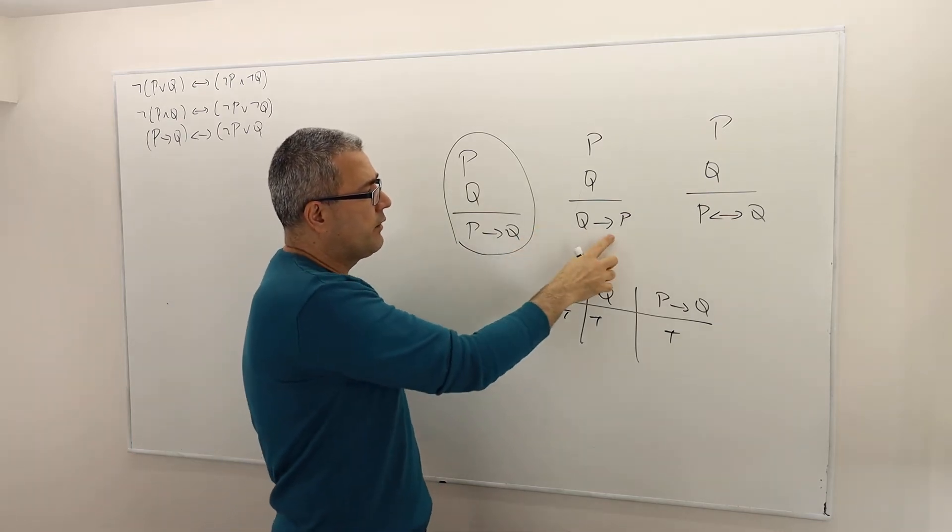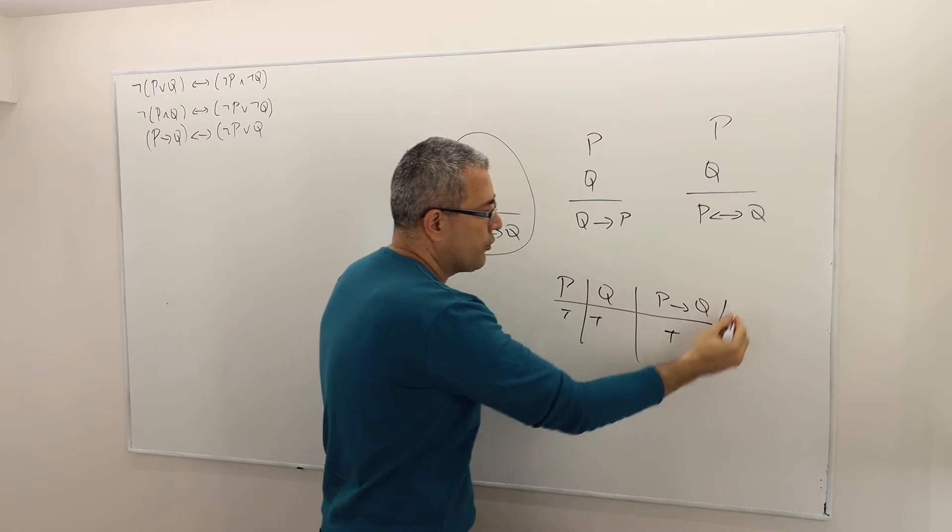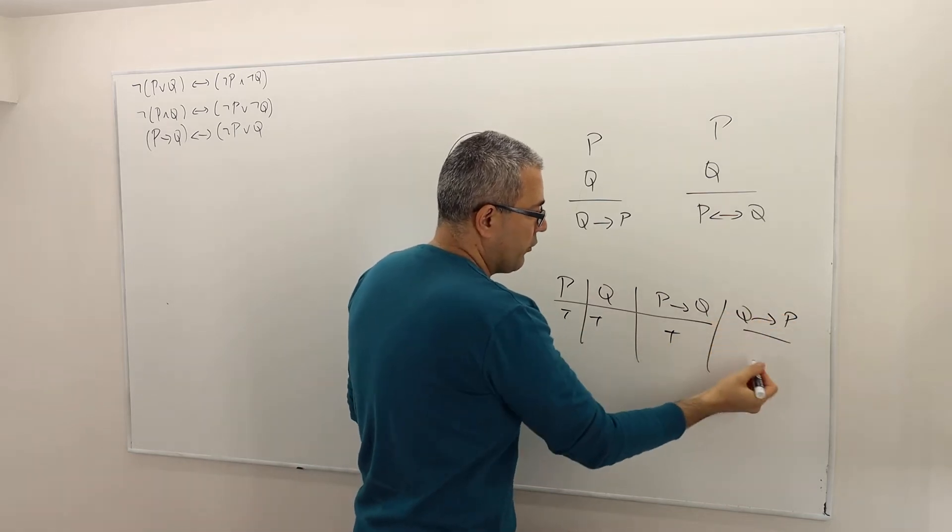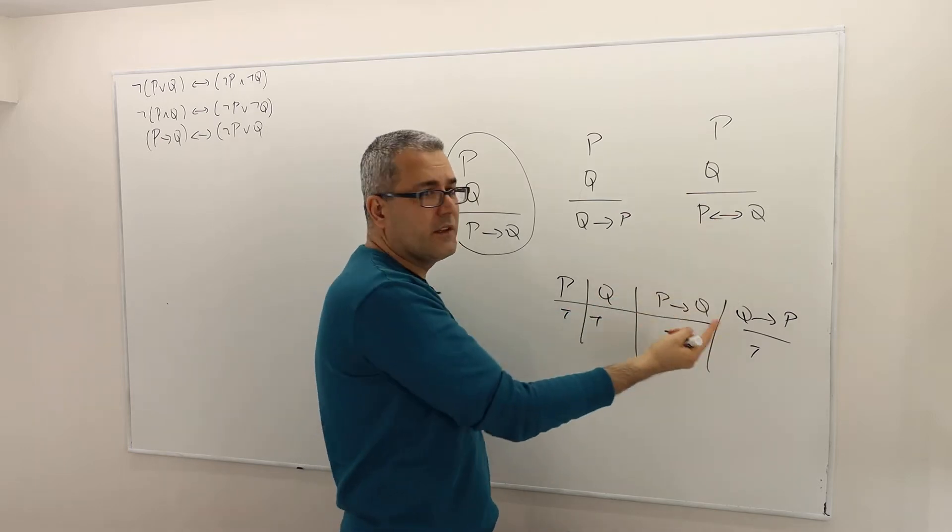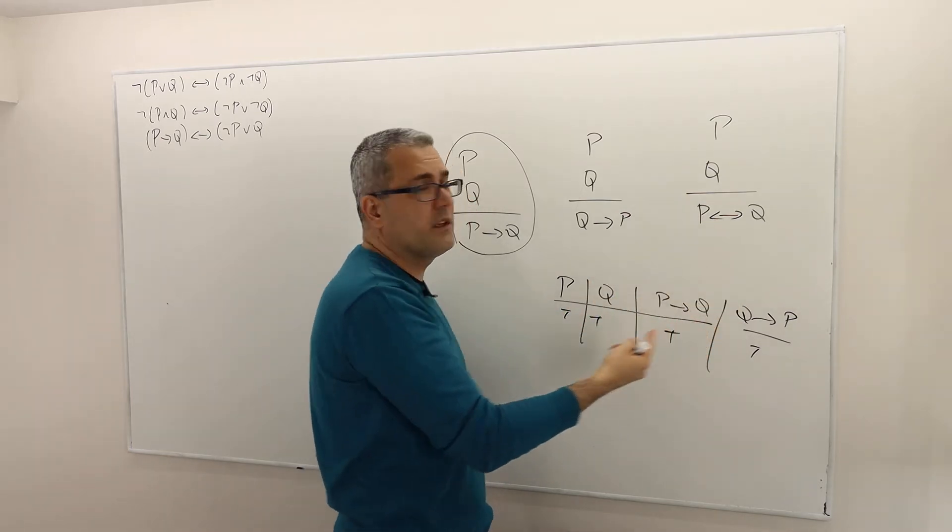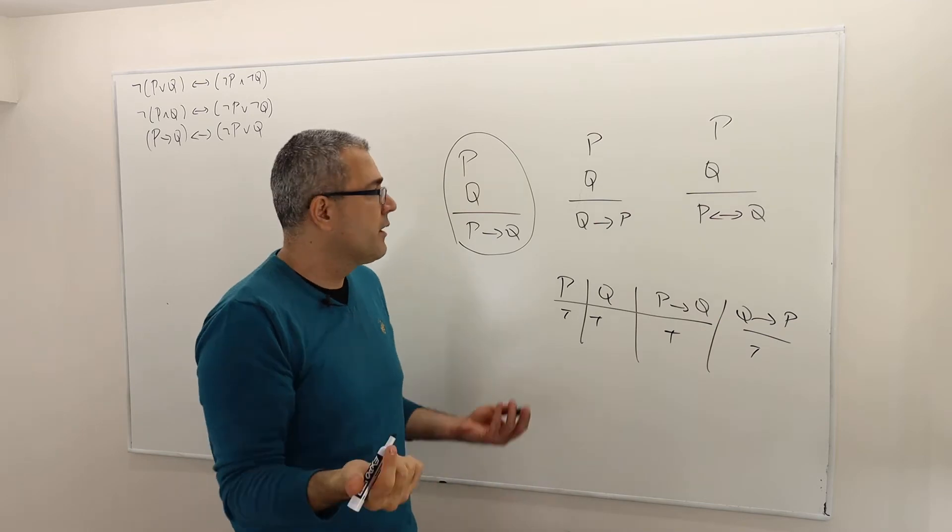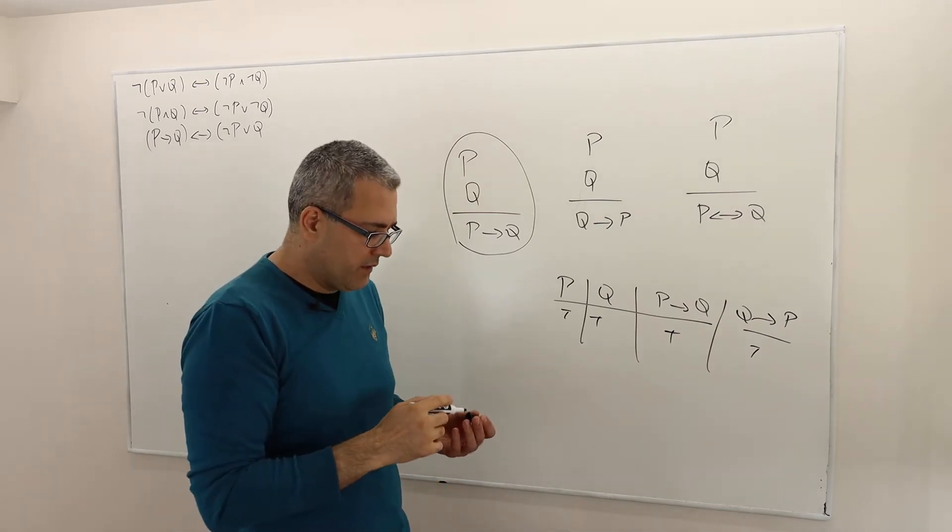Therefore, deducing P implies Q, given that P and Q, is a valid argument. Same here. Q implies P is also true because both arguments are true. And because these two are true, I can say by conjunction, if-and-only-if statement is also true. So as simple as this.